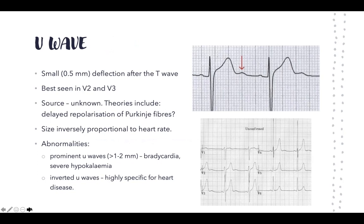Finally, the U wave is a small deflection after the T wave, best seen in V2 and V3. We don't fully understand why it occurs — one theory is delayed repolarization of the Purkinje fibers. Its size is inversely proportional to heart rate: faster heart rate means smaller U wave, slower heart rate means larger U wave.